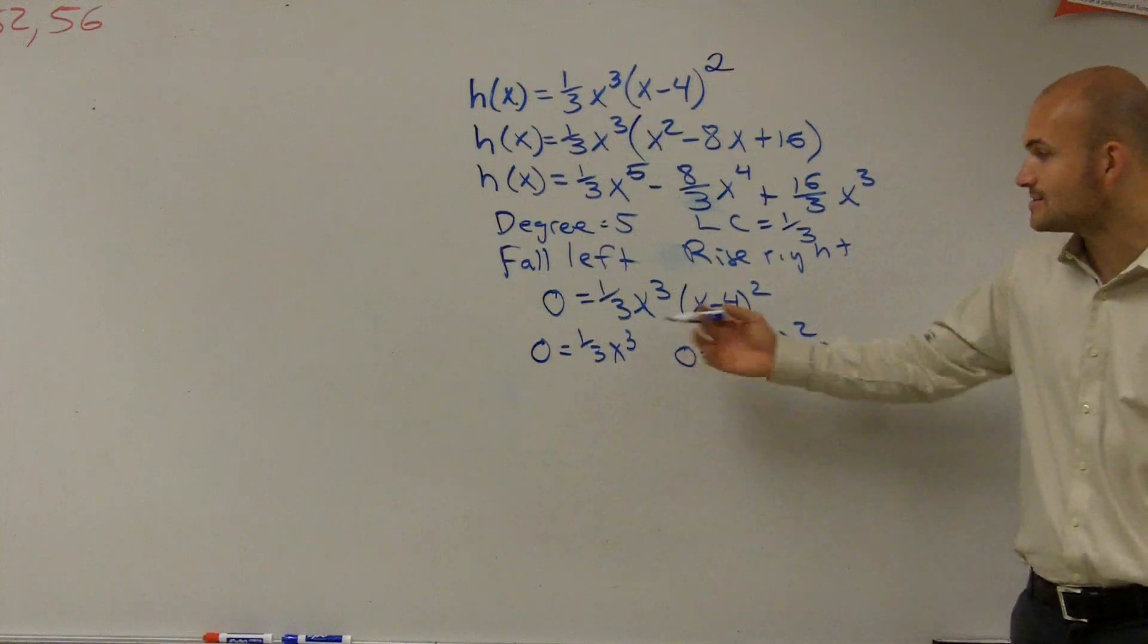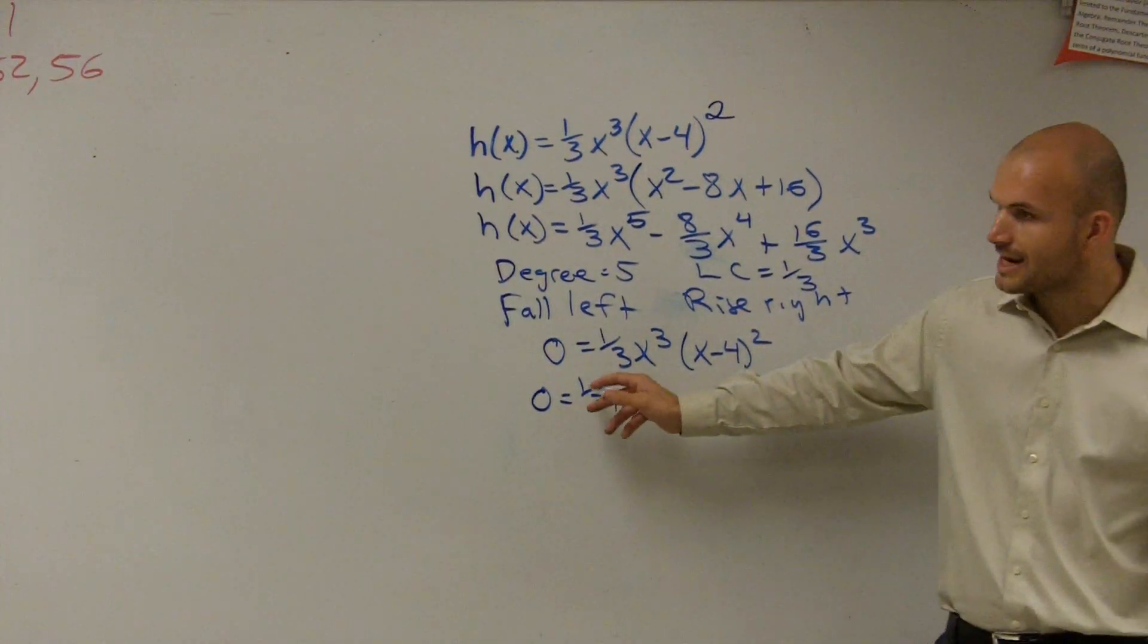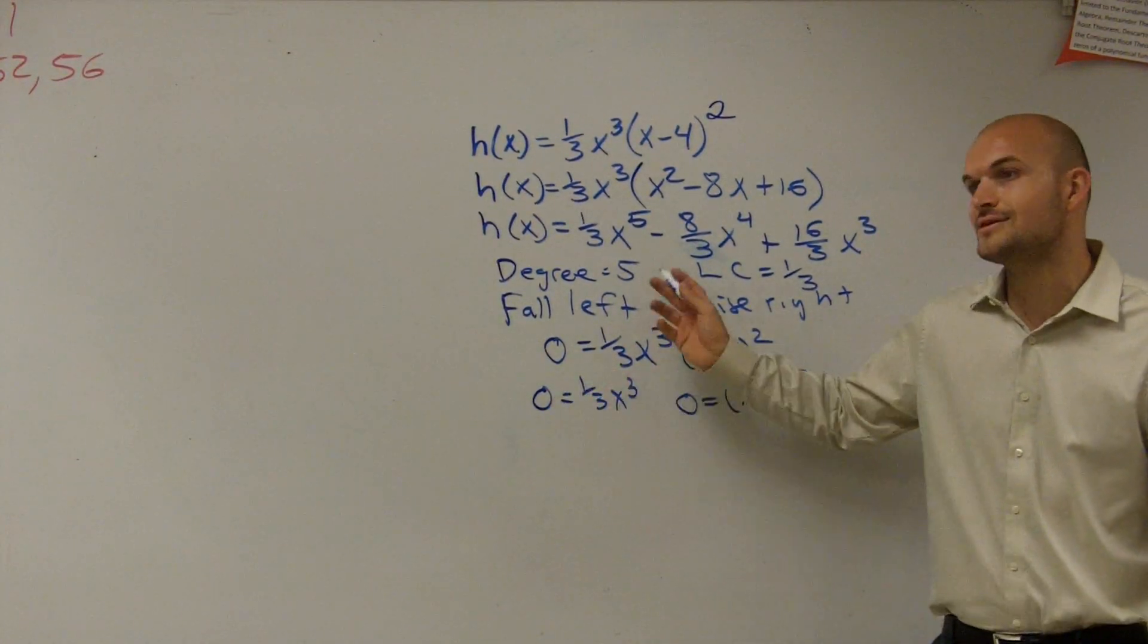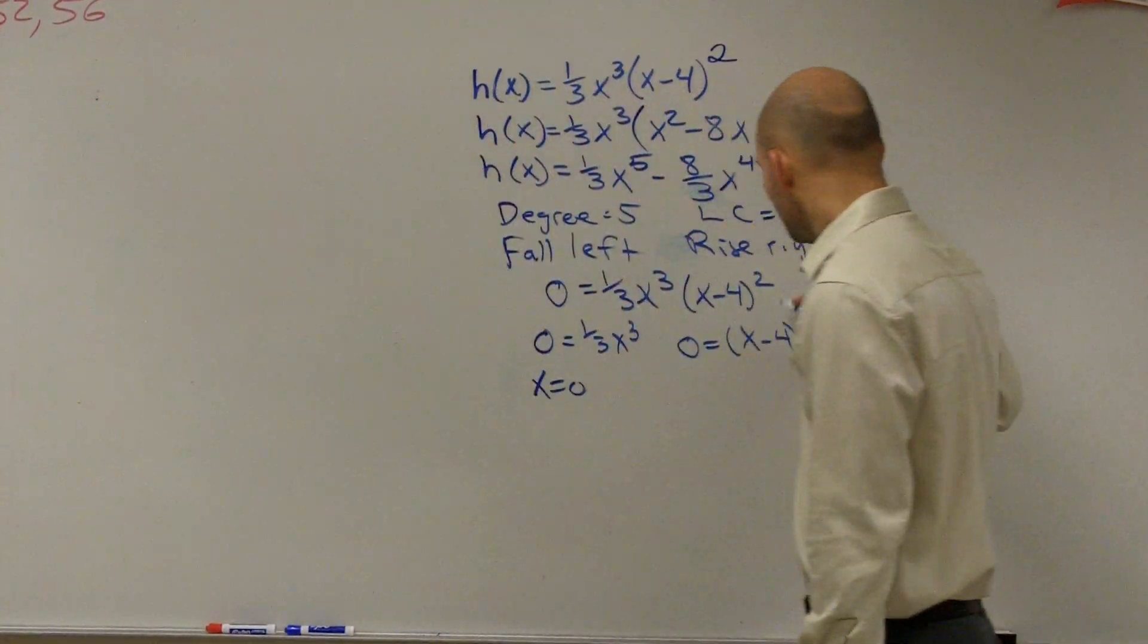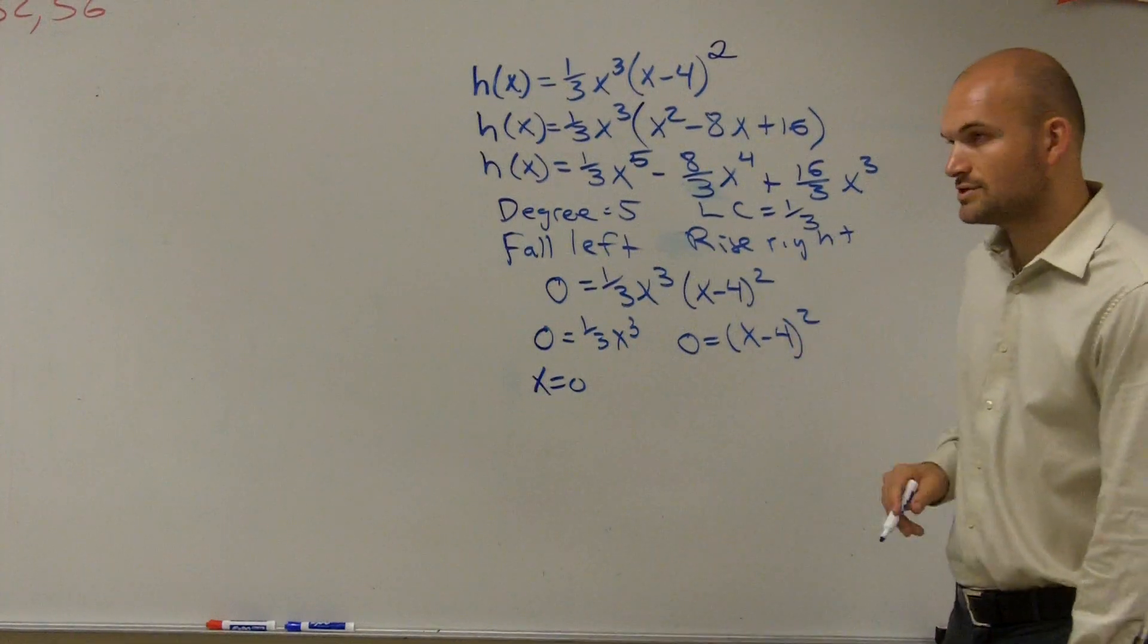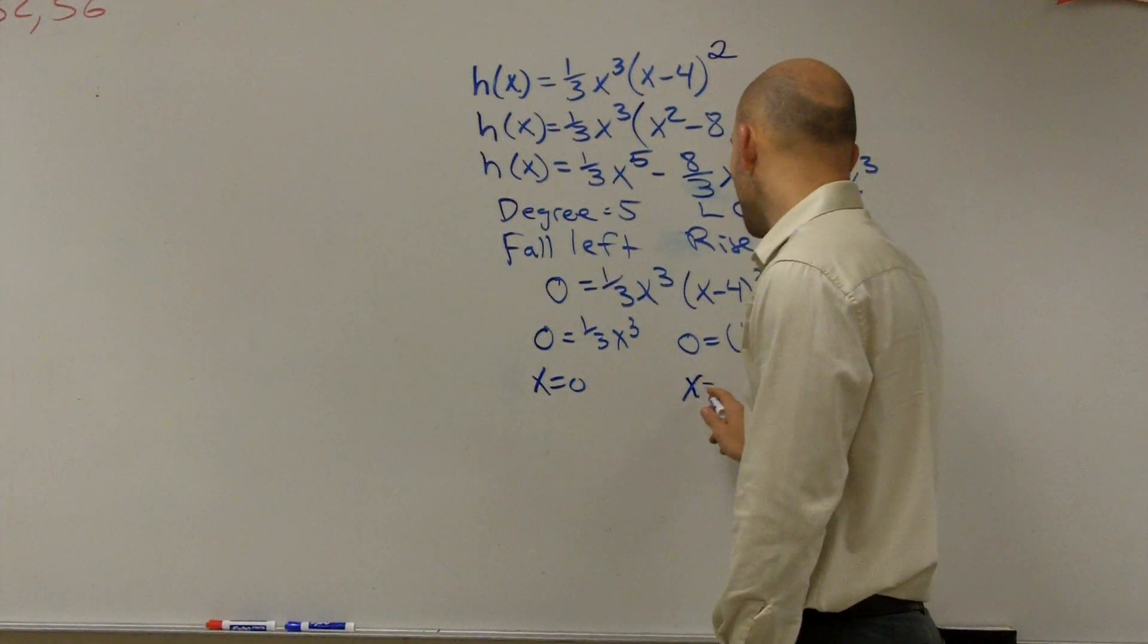So now we just solve each one of these for 0. Divide by one-third on both sides, cube root on both sides, and you get x equals 0. Here, you're going to square root, add 4 to the other side, you get x equals 4.